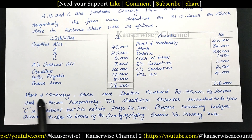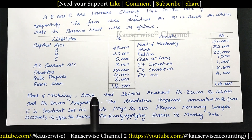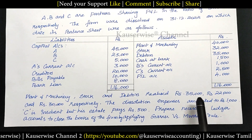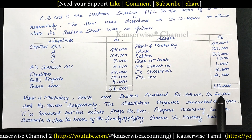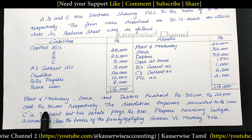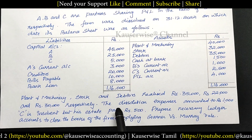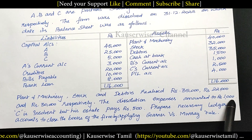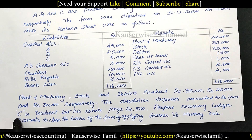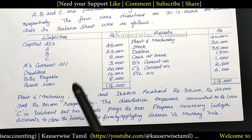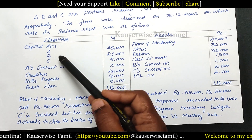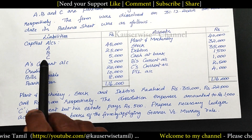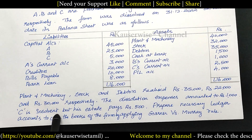Now see the adjustments. Plant and machinery, stock and debtors were realized for 35,000, 22,000 and 30,000 respectively. The dissolution expenses amounted to rupees 1,000. C is insolvent. So out of three partners, one partner — C — is insolvent.